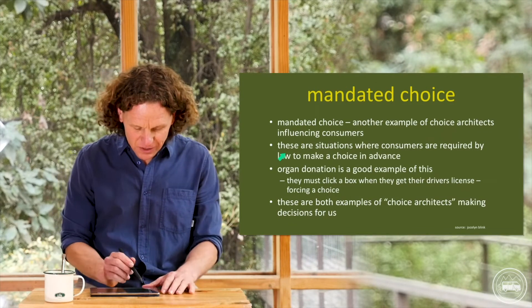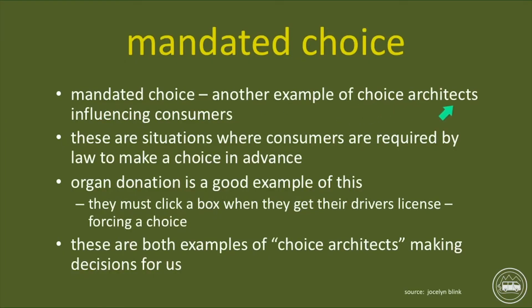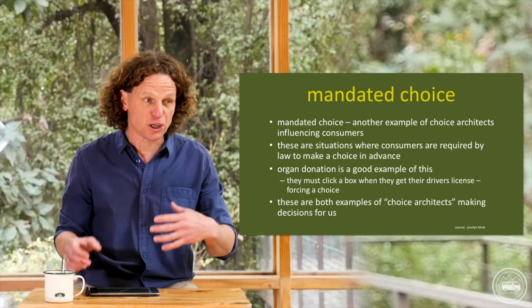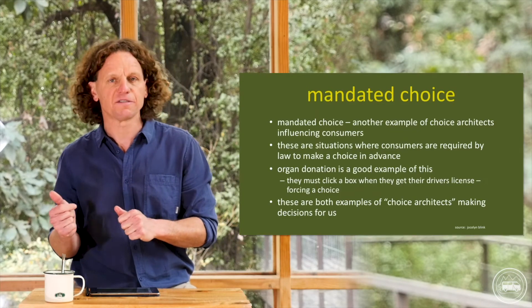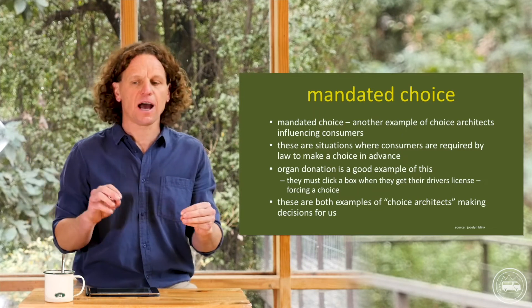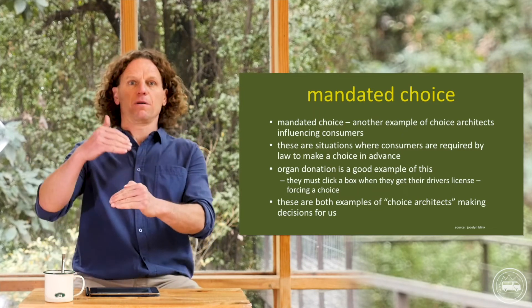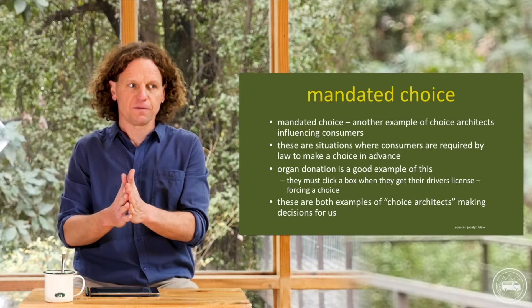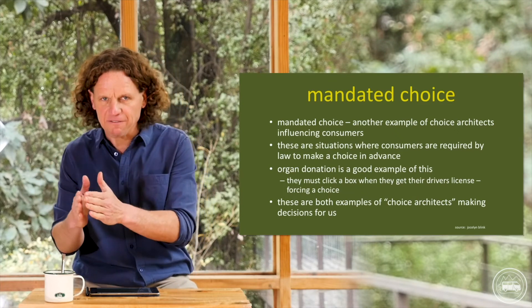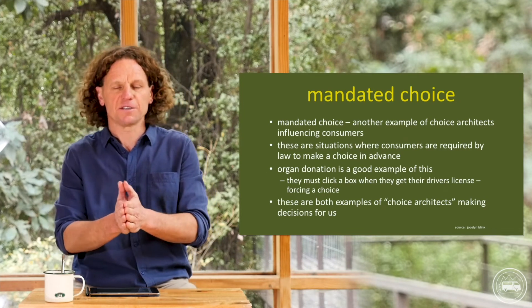The last topic is mandated choice. This is another example of choice architects influencing consumers. These are situations where consumers are required by law to make a choice in advance. Organ donation is a good example — they must click a box when they get their driver's license, forcing a choice. Mandated choice — you have to choose, it's a required field. Mandating a choice to opt in or opt out is a step further along in terms of choice architecture, because at least you're making people actually decide, rather than just having a default decision made for them.